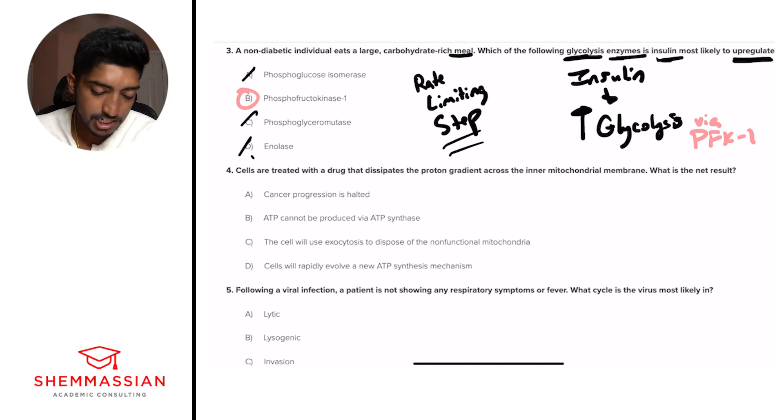Cells are treated with a drug that dissipates the proton gradient across the inner mitochondrial membrane. What is the net result? A, cancer progression is halted. B, ATP cannot be produced via ATP synthase. C, the cell will use exocytosis to dispose of the nonfunctional mitochondria. Or D, cells will rapidly evolve a new ATP synthesis mechanism. All right. So the idea is that we're dissipating proton gradient. These should be buzzwords that you're hearing in your head over and over again. Across the inner mitochondrial membrane, what is the net result?